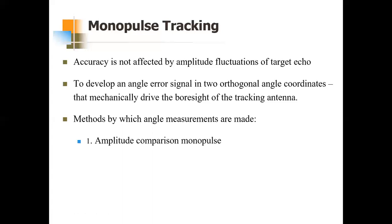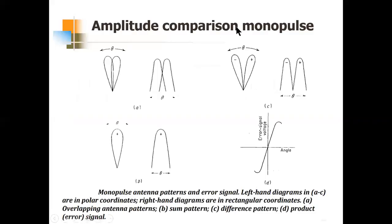Under monopulse tracking there are two categories: amplitude comparison monopulse and phase comparison monopulse. In this video we will cover amplitude comparison monopulse; in the next video we will discuss phase comparison monopulse. For amplitude comparison monopulse, we first take an example of a single angle coordinate where two simultaneous beams are sent. For two angle coordinates, we would need four beams. In this single-angle-coordinate case, two simultaneous beams are squinted with respect to each other.